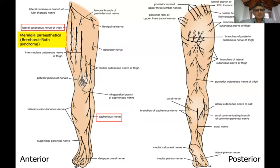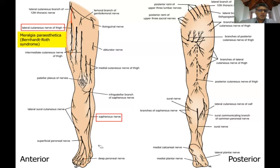Number two is the saphenous nerve. This is the only nerve that comes into the leg as a branch of the femoral nerve — all other femoral nerve branches are used up in the thigh. The saphenous nerve is purely cutaneous; it doesn't supply any muscles in the leg. It comes through the adductor canal, exits before the adductor hiatus, and accompanies the great saphenous vein, lying immediately in front of it all the way down to supply the medial aspect of the foot.